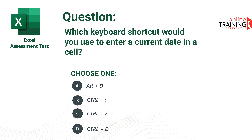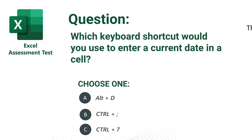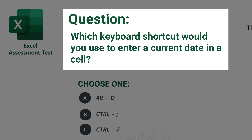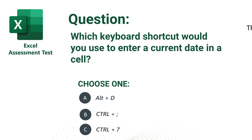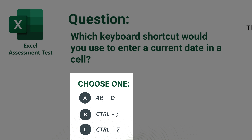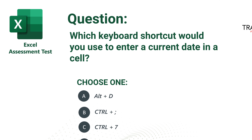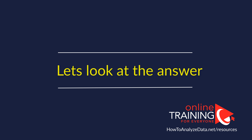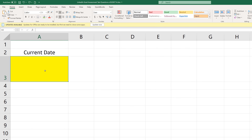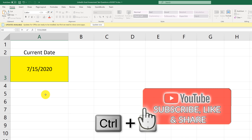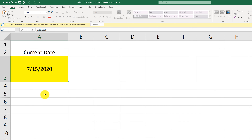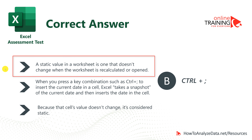Here is a tricky question to test your knowledge of Excel keyboard shortcuts, which is very frequently used as part of Excel assessment tests. Which keyboard shortcut would you use to enter the current date in a cell? Four choices: Alt+D, Ctrl+semicolon, Ctrl+7, and Ctrl+D. To insert the current date into an Excel sheet, put your cursor on the cell and press Ctrl and semicolon. Keep in mind that the value inserted remains static — if you open the same worksheet tomorrow, the date will still be yesterday's date. The correct answer is B — Ctrl+semicolon.